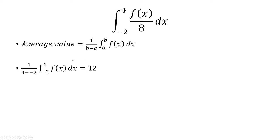Now, we're looking at negative 2 to 4, so a is negative 2, b is 4. We have 1 over 4 minus negative 2, and the integral from negative 2 to 4, f of x dx.